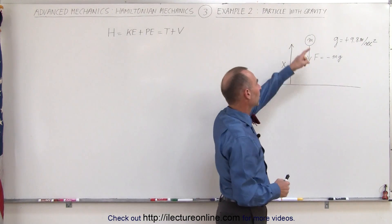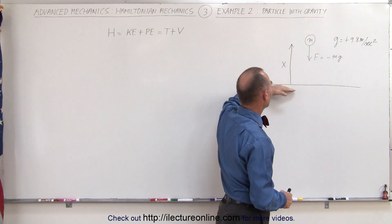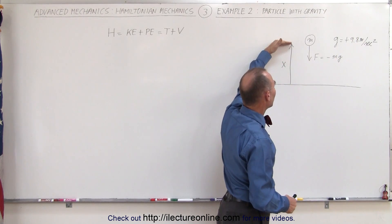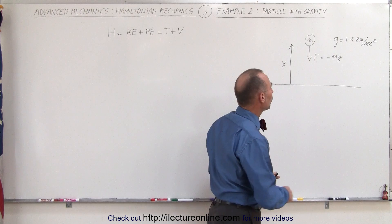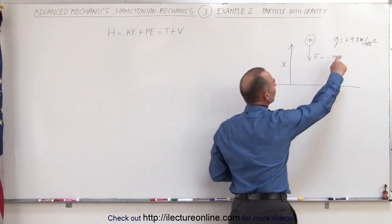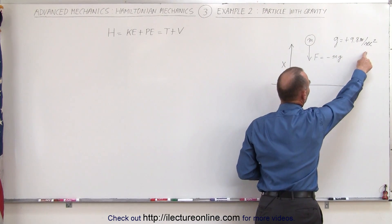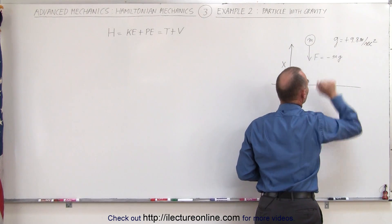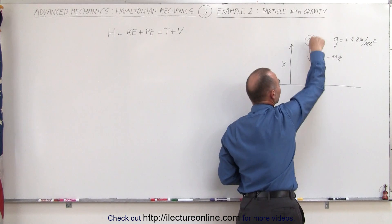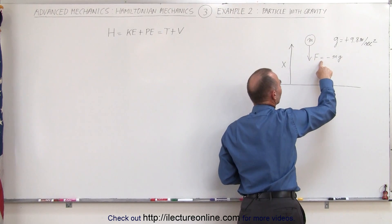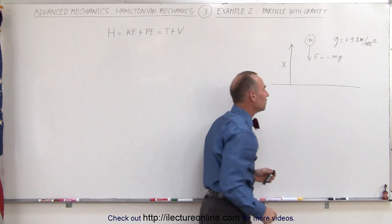Notice the particle has mass m. It's at a position x above the ground — we're using generalized coordinates here. Notice we use g as a positive 9.8 meters per second squared, simply a constant, and the force is acting downward. Therefore, it's equal to minus mg.